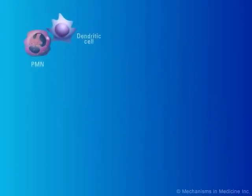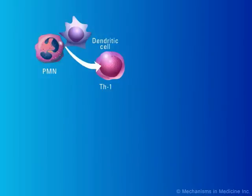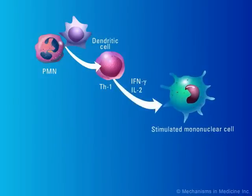Other cells are also involved in protecting the body from mucocutaneous candidiasis. A particular brand of lymphocytes called Th1 cells also play a role in protecting the body from mucocutaneous candidiasis. Neutrophils and dendritic cells produce interleukin-12 that activates Th1 lymphocytes. The activated Th1 lymphocytes secrete interferon gamma and interleukin-2, which further stimulate phagocytic cells to engulf Candida organisms.